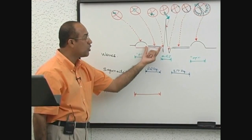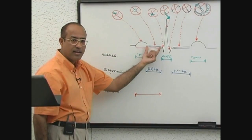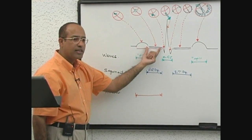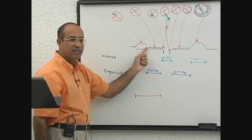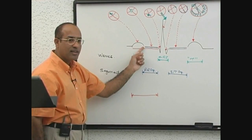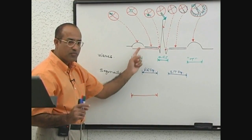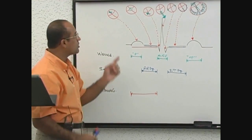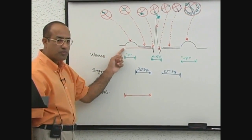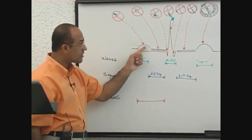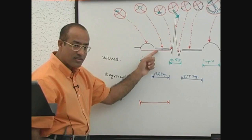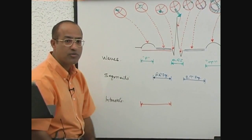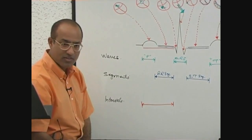The PR segment has no wave involved in it. During the PR segment, there is only conduction through the AV node. But when we talk about the PR interval, we are talking about the spread of depolarization in the atrium plus conduction through the AV node, just before the onset of ventricular depolarization.